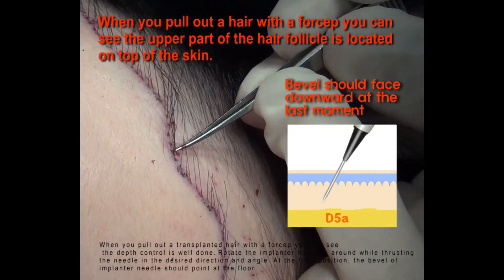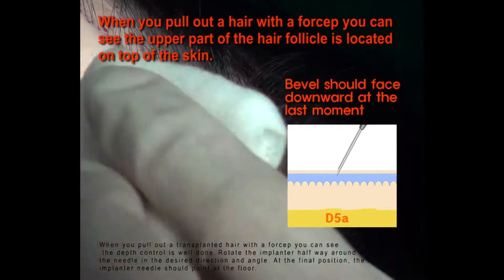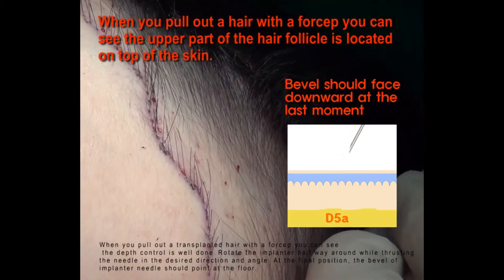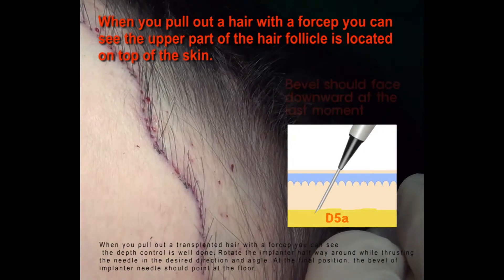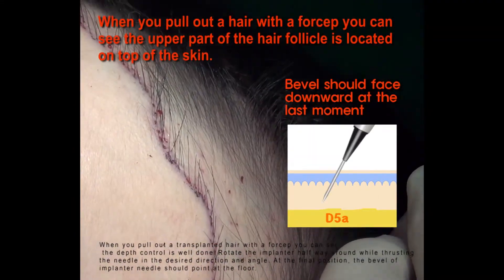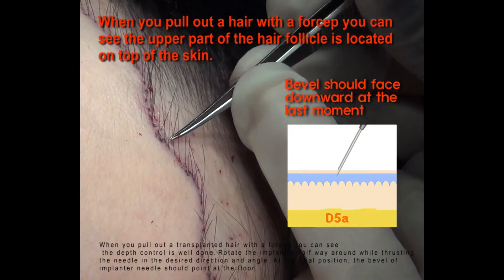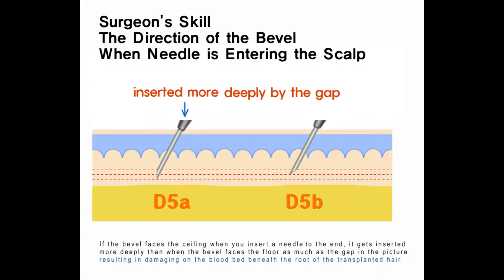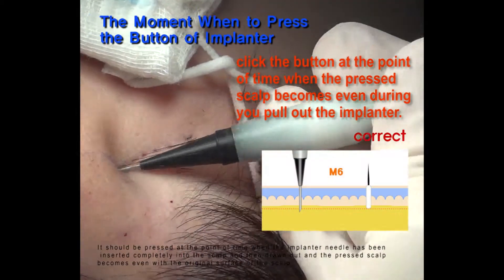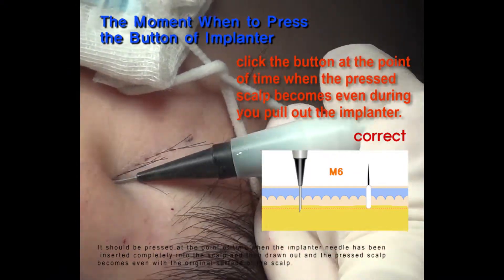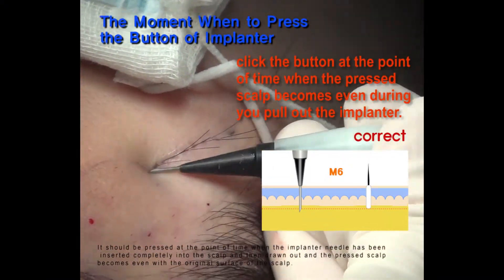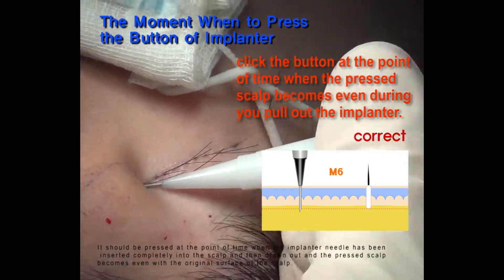When you pull out a transplanted hair with the forcep, you can see that the depth control is well done. Rotate the implanter halfway around while thrusting the needle in the desired direction and angle. At the final position, the bevel of the implanter needle should point at the floor. If the bevel faces the ceiling when you insert the needle to the end, it gets inserted more deeply than when the bevel faces the floor, resulting in damage to the blood bed beneath the root of the transplanted hair. It should be pressed at the point when the implanter needle has been inserted completely into the scalp and then drawn out, and the pressed scalp becomes even with the original surface.